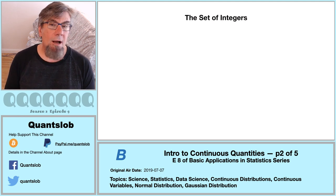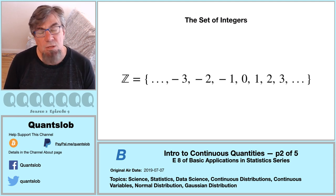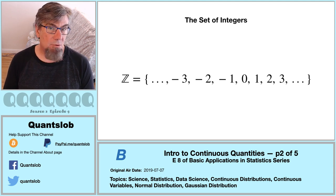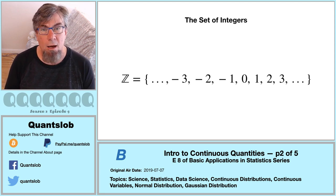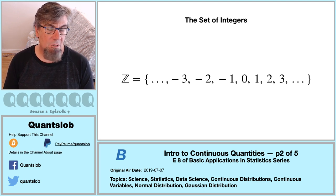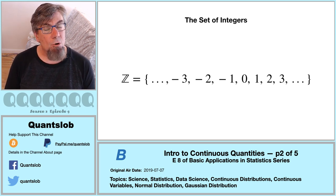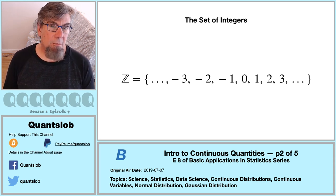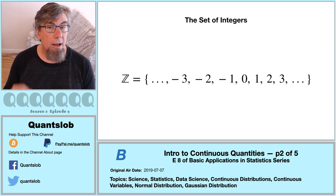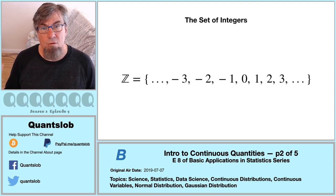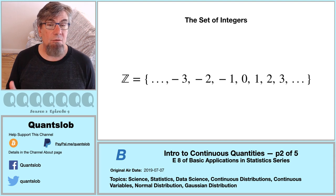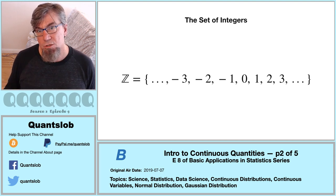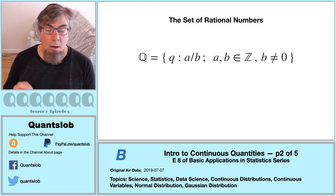We're going to embark on some properties of numbers. We start with the set of integers, typically represented by capital Z — usually in blackboard bold typeface. The Z comes from the German word zahlen, plural for zahl, meaning numeral. The set of integers is basically all the whole numbers along with all the negative whole numbers — or in fancy math talk, the union of all the whole numbers and their additive inverses. So-called negative three is simply the additive inverse of three.